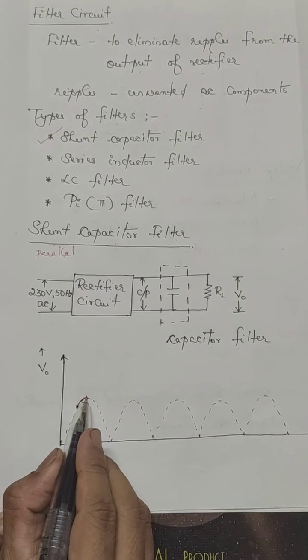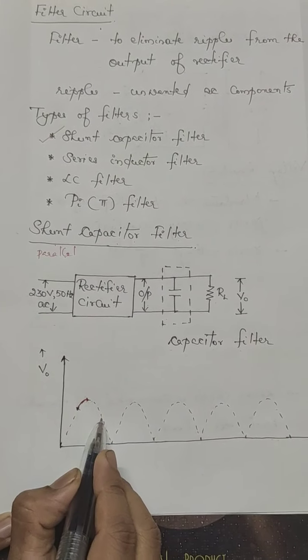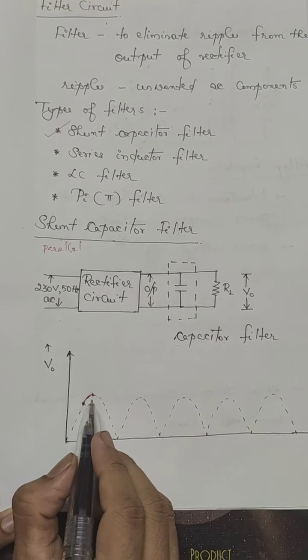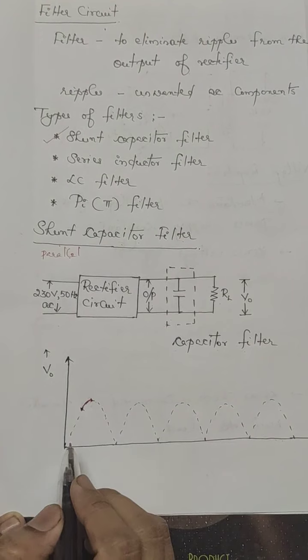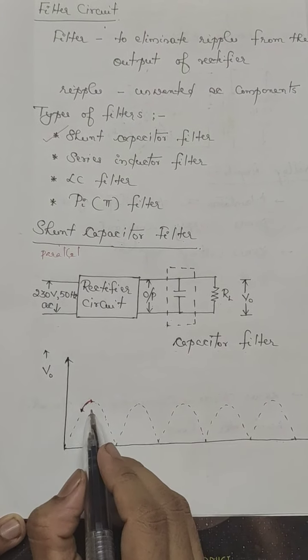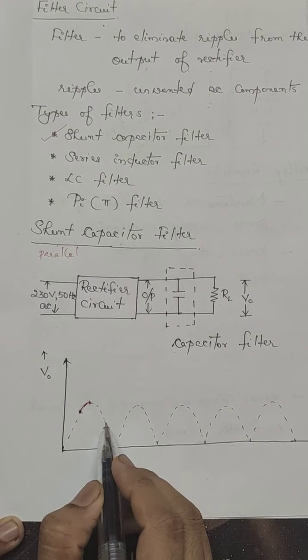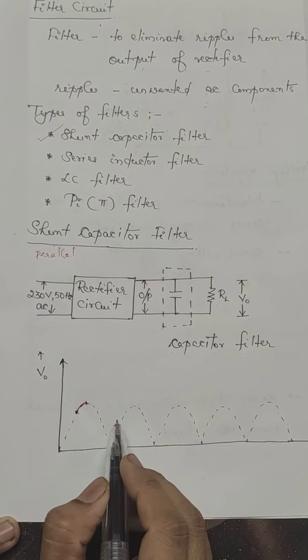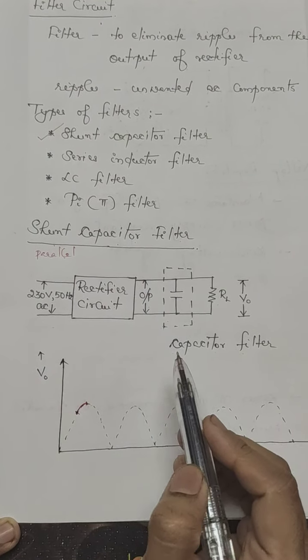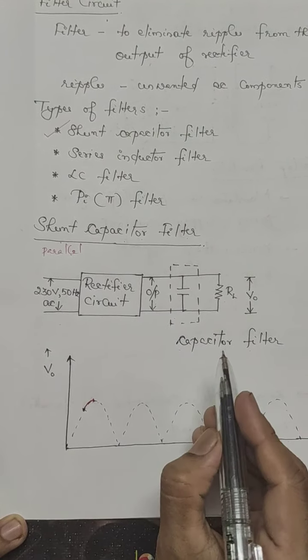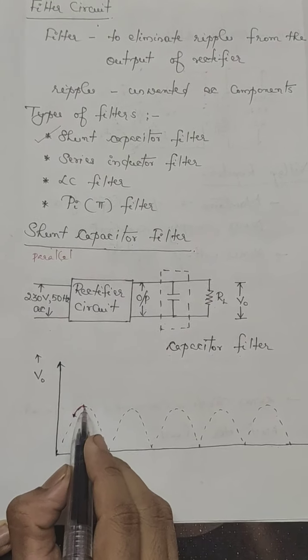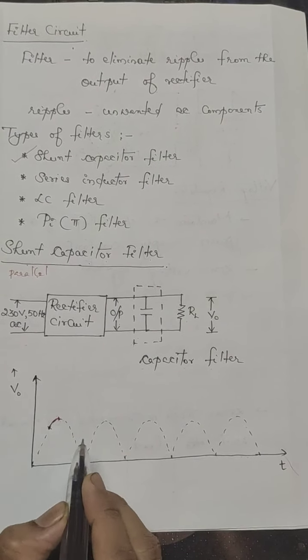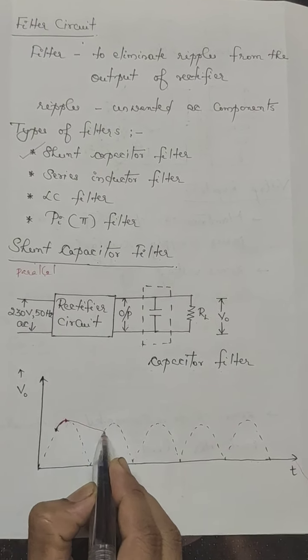And when the rectifier voltage starts decreasing, the capacitor starts discharging. But the capacitor cannot discharge rapidly. A capacitor is having a property that it opposes sudden change in voltage across it. The voltage across a capacitor cannot undergo sudden changes. So the discharging of the capacitor will be a slow process. The capacitor cannot discharge like this. It discharges slowly like this.